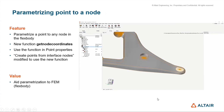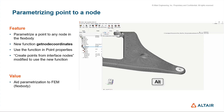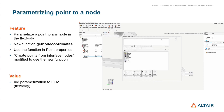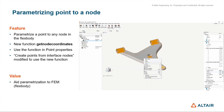Another improvement for working with optimization of models with flex bodies is the ability to parameterize a point with respect to a node. There is a new function called get_node_coordinates. This function can be used to locate a point on a node so that when there is an update to a flex body where the node has moved, the point also follows the node location.